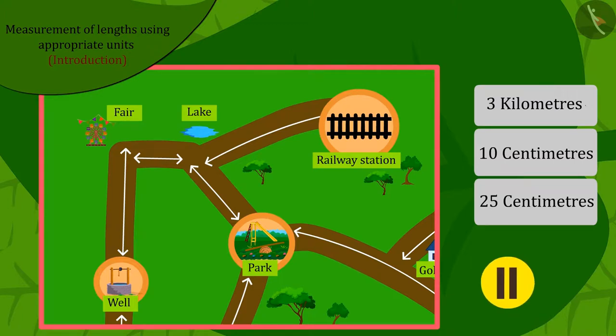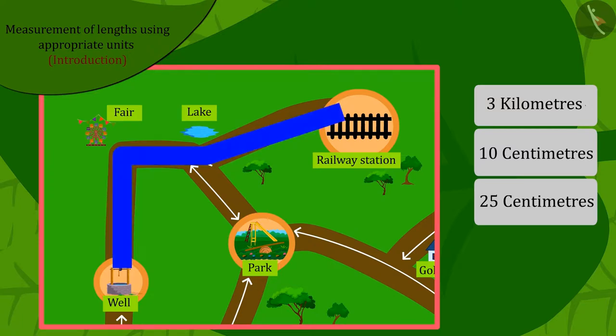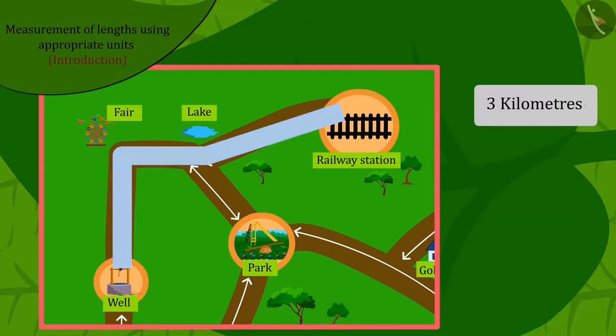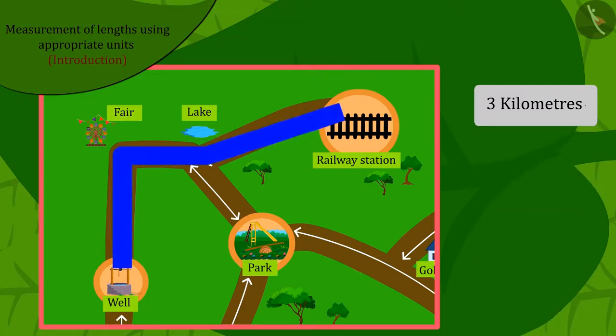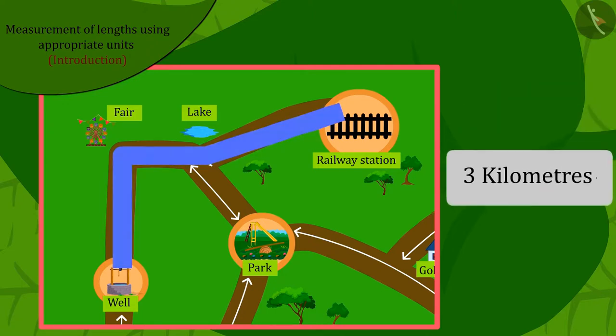Well done, kids! The distance from the railway station to the well is very long. We cannot measure it in centimeters. Therefore, the distance from the railway station to the well will be 3 km.